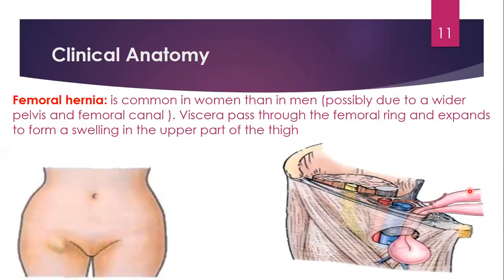The clinical correlate here is that femoral hernia can occur because of the saphenous opening, which serves as a weakness in the area, since it allows the great saphenous vein to drain into the femoral vein.